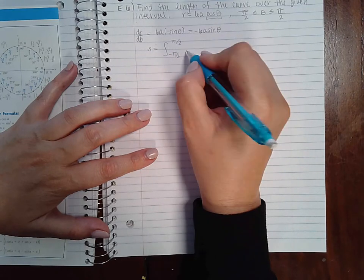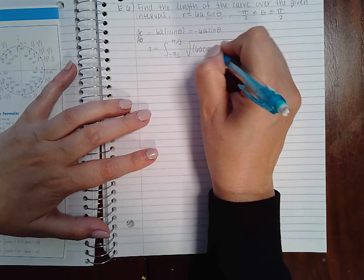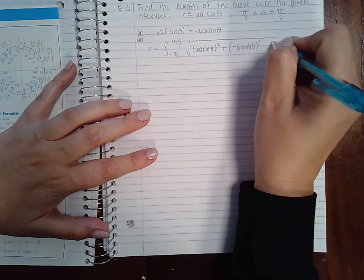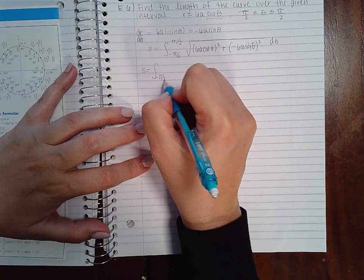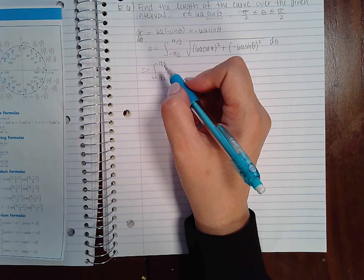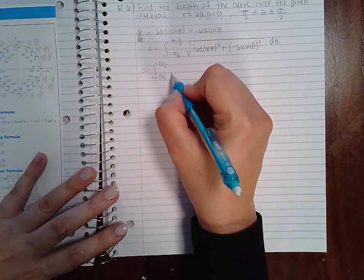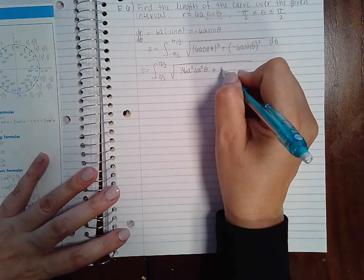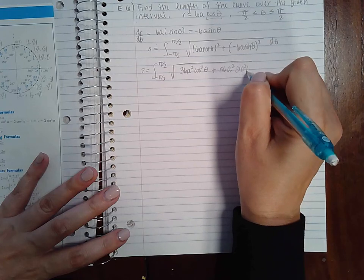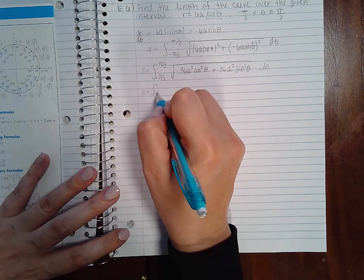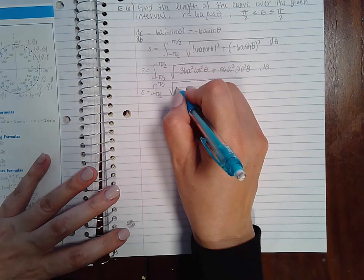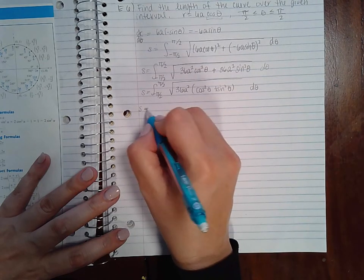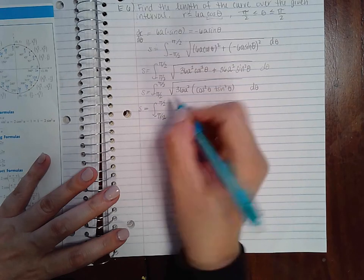And if I plug that into my formula from negative pi over two to pi over two, square root of R squared plus dr d theta squared. So we get 36 a squared cosine squared theta plus, because negative six times negative six is positive 36 a squared sine squared theta. And I can factor out that 36 a squared. And we know from our Pythagorean identities that sine squared plus cosine squared is just one.